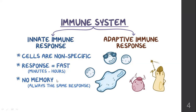Innate immunity has no memory — always the same response. For example, dust allergy: your innate immunity may consider dust as a pathogen. Within minutes of inhaling dust, you will start sneezing and some people may have an asthmatic attack. A week later when exposed to dust again, the same symptoms will come all over again. Your body will not think 'this happened last week, we know how to tackle it.' The innate immunity does not have a memory.